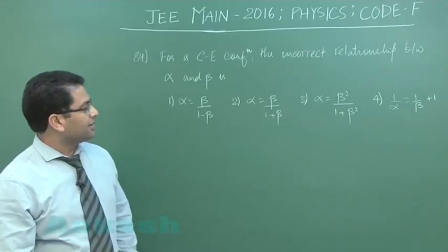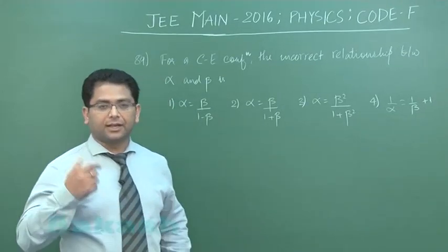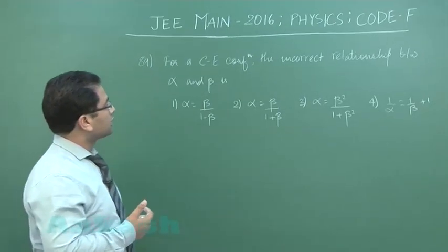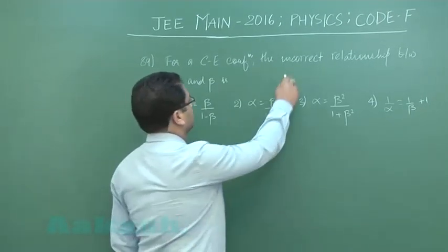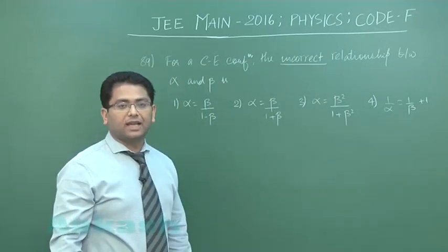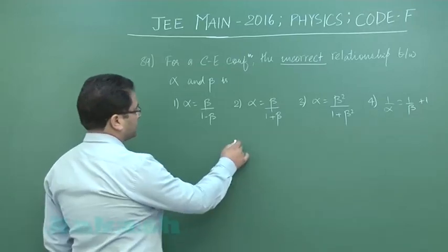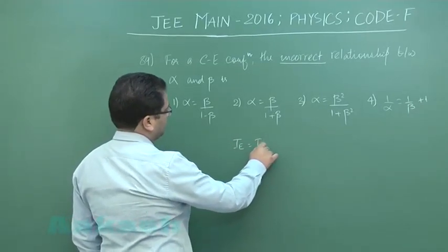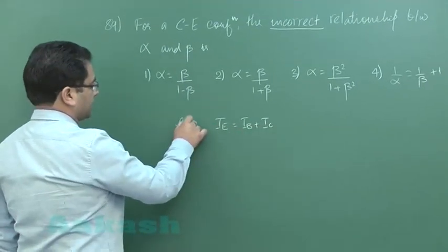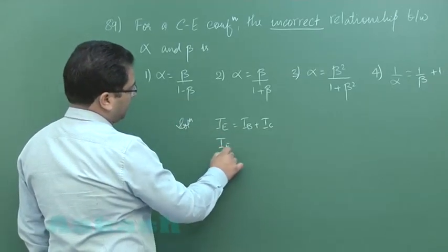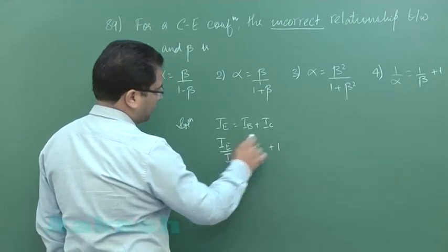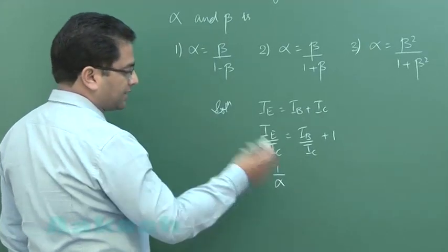Question number 89 is from transistor, another question from semiconductor topic. It says for a common emitter configuration, find the incorrect relationship between alpha and beta. In order to calculate, let's try to see: IE is IB plus IC, the emitter current, base current, and collector current.